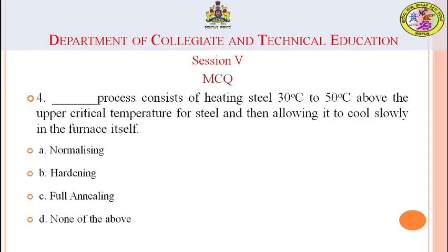Question 4: The blank process consists of heating steel 30 to 50 degrees Celsius above the upper critical temperature and then allowing it to cool slowly in the furnace itself. The options are normalizing, hardening, full annealing, and none of the above. The answer is full annealing, because in the full annealing process, the steel is heated 30 to 50 degrees Celsius above the upper critical temperature and then allowed to cool slowly in the furnace.